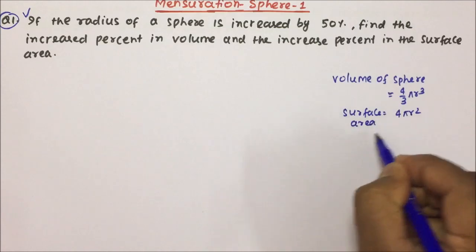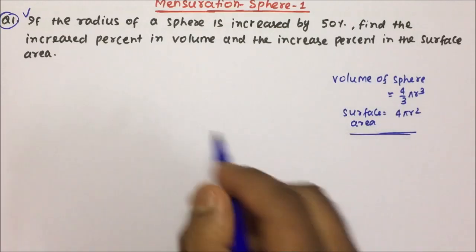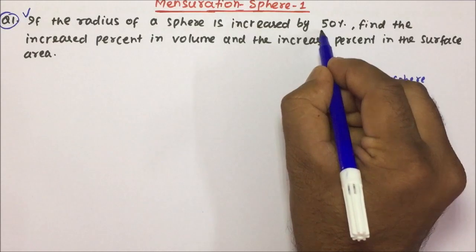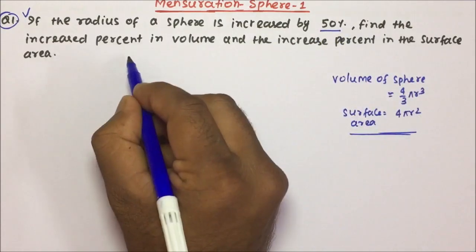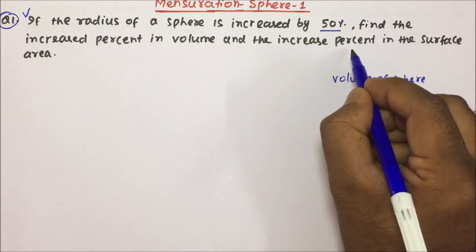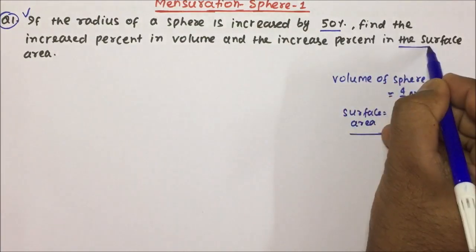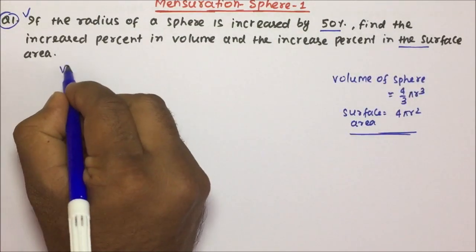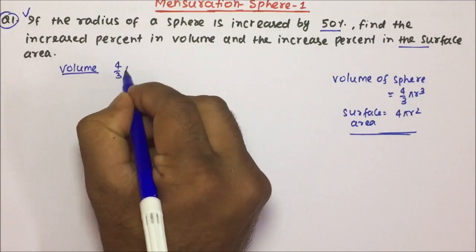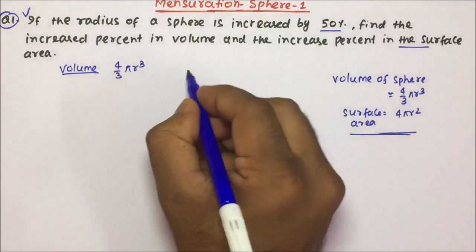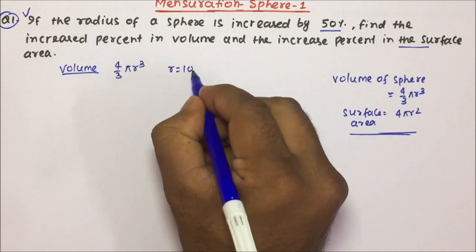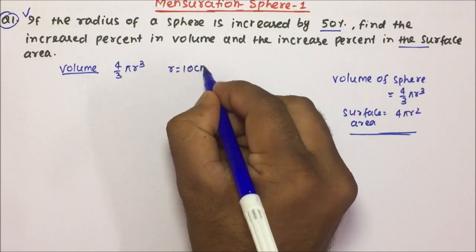And the surface area is nothing but 4 π r². Now let's see what has been given in the question. If the radius of a sphere is increased by 50 percent, find the increased percentage in volume and the increased percentage in the surface area. First let's talk about volume. Volume will be nothing but 4/3 π r³. Here I am assuming r = 10 cm.